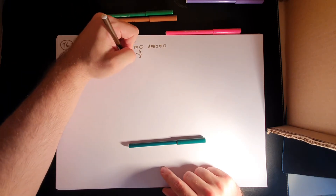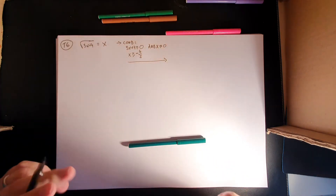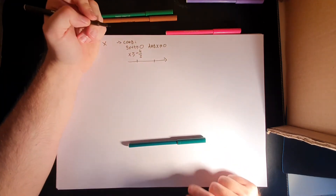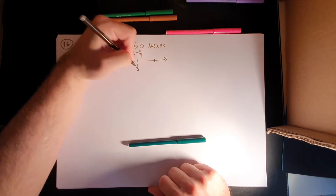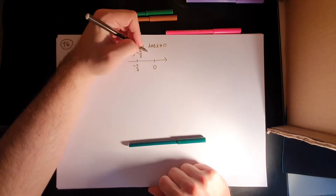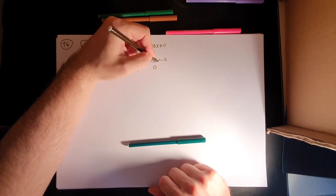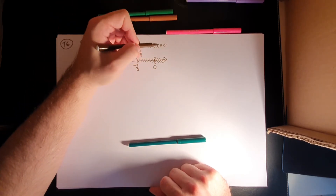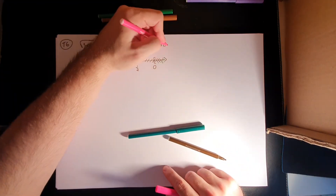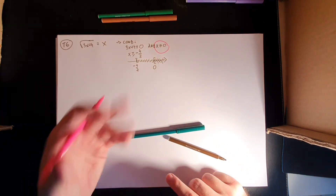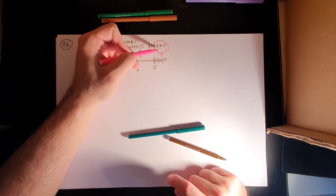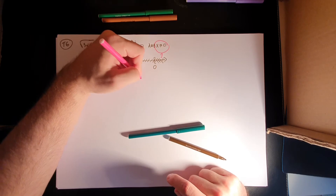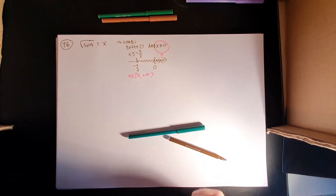The number line is going to determine the actual condition. We place minus 4 over 3 and 0 on the number line. Everything to the right of each boundary is included, and we end up with the main condition being x is greater or equal to 0. You can write it as x is an element of 0 to plus infinity.